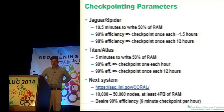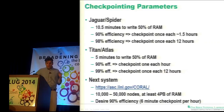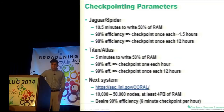The Jaguar-Spider combination took 10.5 minutes to write 50% of RAM, so to get 90% efficiency you checkpointed once every 1.5 hours — not too bad. Titan and Atlas is much better: twice the memory but still only five minutes for checkpointing. But the real tricks come in the next system.